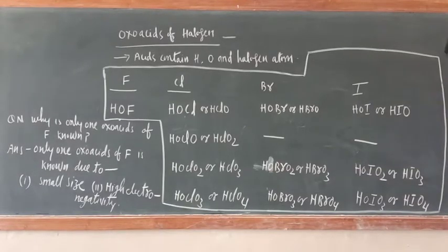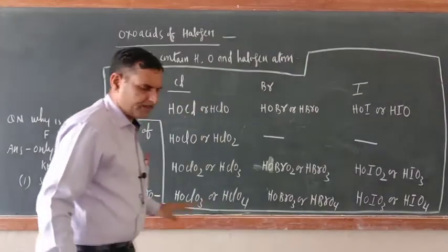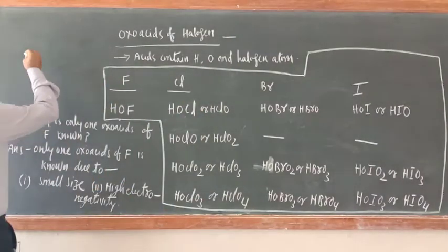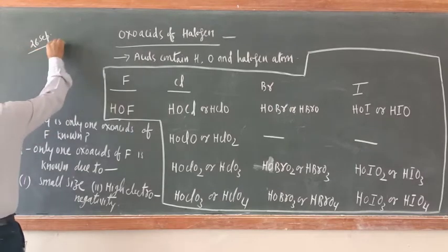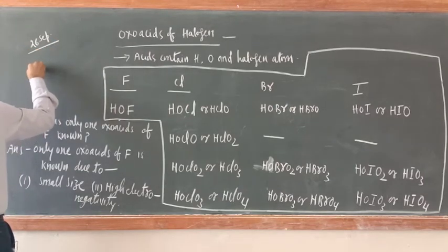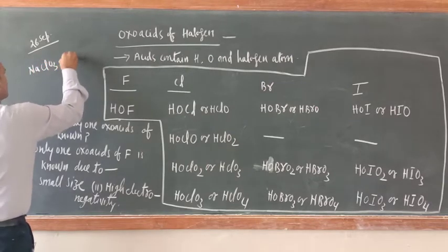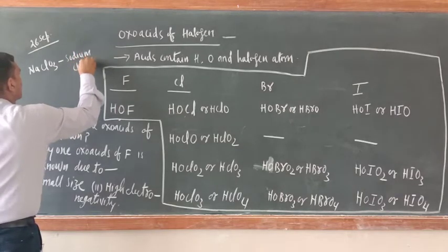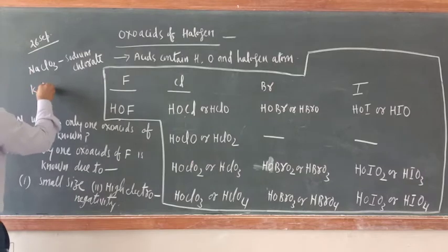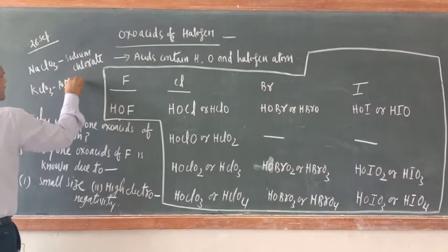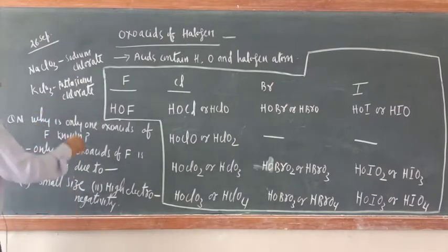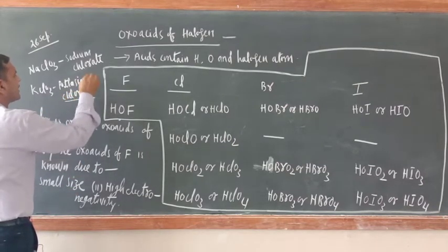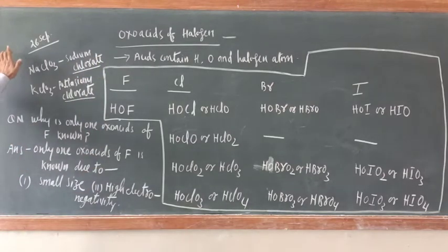Good morning dear cadets. Before starting today's video, I would like to rectify one thing from the video of 26 September. The rectification is: NaClO3 is sodium chlorate, and KClO3 is potassium chlorate. In that video, the spelling was wrong — chlorate is spelled C-H-L-O-R-A-T-E. Please rectify this in the video of 26 September. Rest everything is okay.